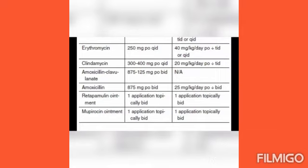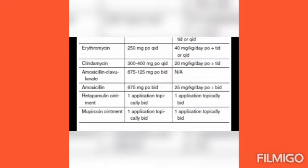Treatment is based on sensitivity results. In cases of methicillin-resistant Staphylococcus aureus (MRSA), minocycline or ciprofloxacin can be given. To summarize, treatment includes penicillin-group drugs, cephalexin (a cephalosporin), and erythromycin or amoxicillin. Students should note the drug names now, as pharmacology details will be studied later.